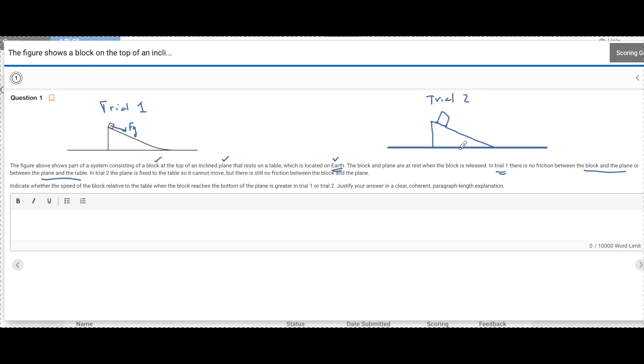In trial two, the plane is now fixed to the table. So the inclined plane can't move, but the block still has a frictionless surface between it.